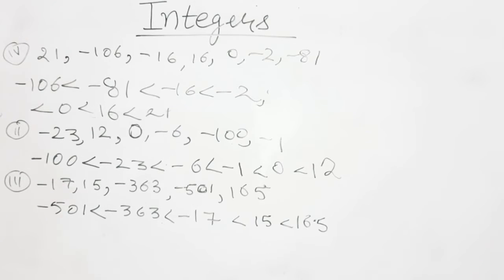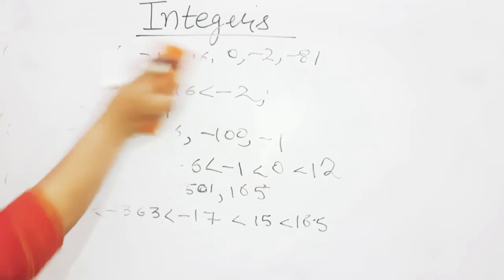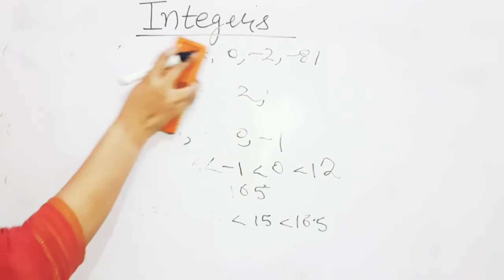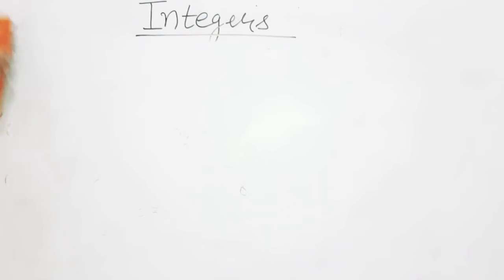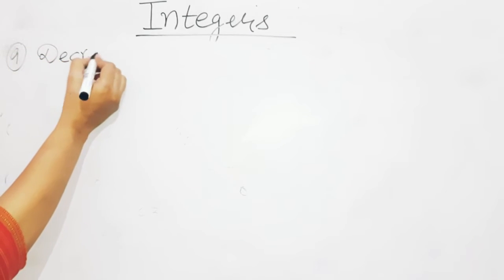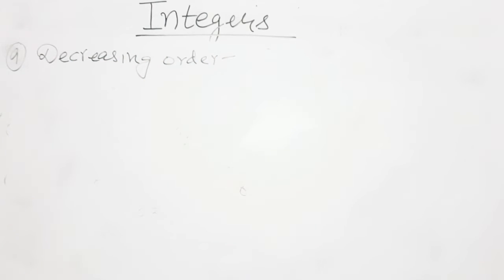Now write the following integers in the decreasing order — question number 9. It has four options. You have to do two options in classwork and two options in homework. Decreasing order means largest to the smallest — descending order, bade se chota. So the biggest number comes first and the smallest comes last.